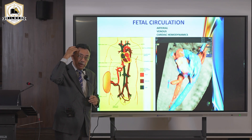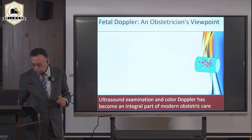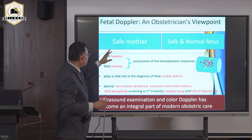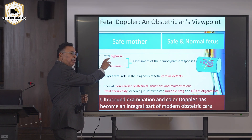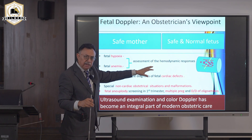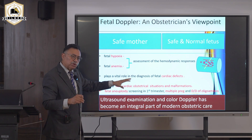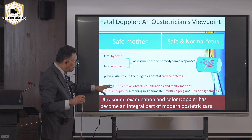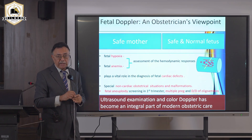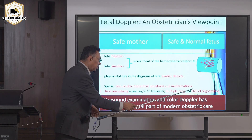Cerebral-placental ratio alteration means the brain is receiving more blood due to hypoxia. Doppler assessment aims to ensure a safe mother and normal fetus by evaluating fetal hypoxia and fetal anemia through hemodynamics of the umbilical, cerebral, and cardiac vessels. It also helps identify fetal cardiac defects, non-cardiac obstetrical situations, malformations, chromosomal anomaly screening, and blood-sharing in multiple pregnancies.